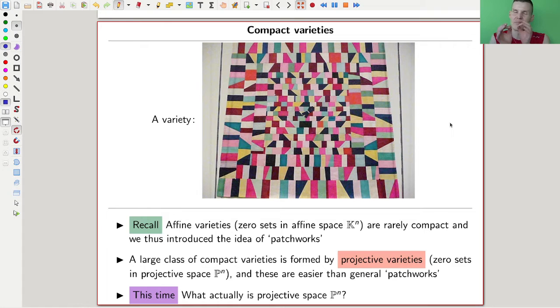And I would rather, first step we would rather like to do is to describe a nice set of compact varieties. And these are the projective varieties. So affine varieties, rarely compact, part of the definition of a variety. Projective varieties, compact,